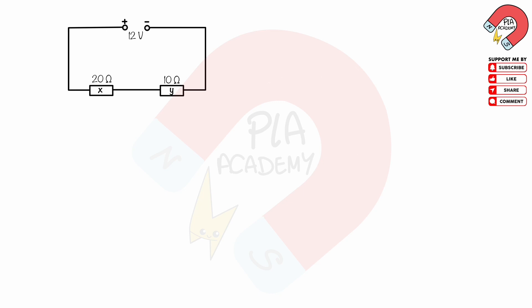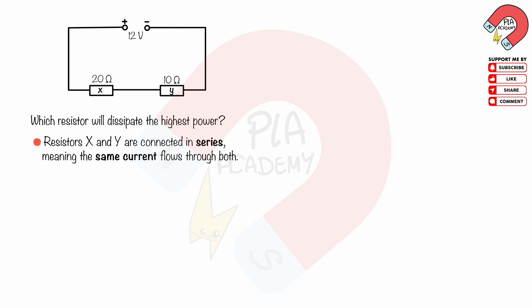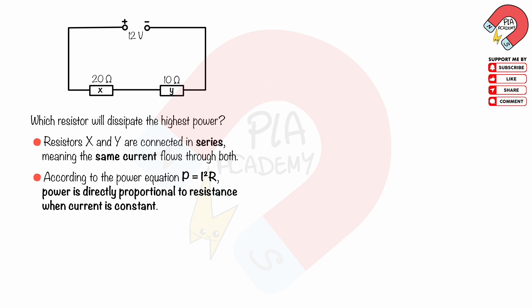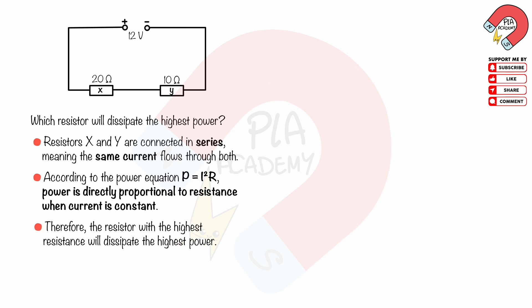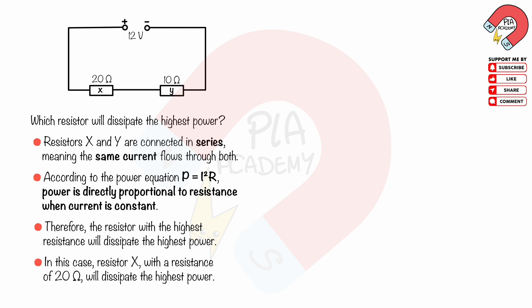Two resistors, 20 ohms and 10 ohms, are connected in series to a 12-volt power supply, as shown. Which resistor will dissipate the highest power? Resistors X and Y are connected in series, meaning the same current flows through both. According to P equals I squared R, power is directly proportional to resistance when current is constant. Therefore, the resistor with the highest resistance — resistor X at 20 ohms — will dissipate the highest power.